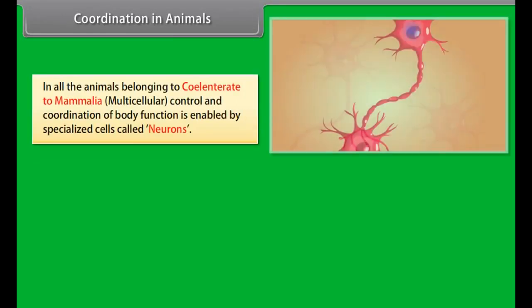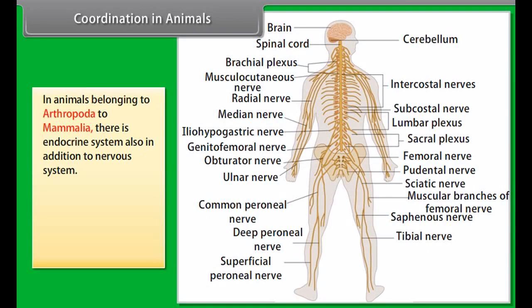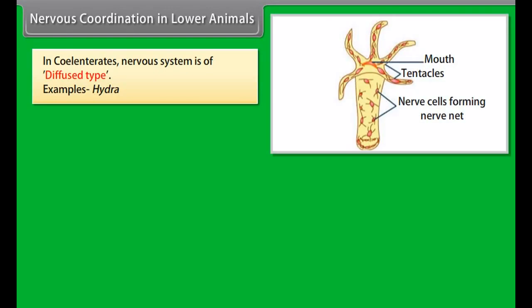In all animals belonging to coelenterata to mammalia, multicellular control and coordination of body functions is enabled by specialized cells called neurons. In higher metazoans, these neurons or nerve cells are organized to form a nervous system. In animals belonging to arthropoda to mammalia, there is an endocrine system also in addition to the nervous system. The nervous and endocrine systems are collectively called the neuroendocrine system.